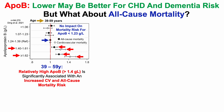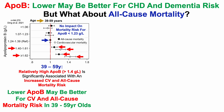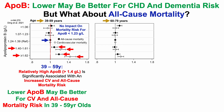This still supports the hypothesis that relatively lower APO-B may be better for cardiovascular and all-cause mortality risk in this relatively young age group. But what about older than 59 years? In 60 to 79-year-olds, using the same setup, relatively higher levels of APO-B were significantly associated with an increased cardiovascular and all-cause mortality risk, with both confidence intervals completely above the red line — a hazard ratio of 1.